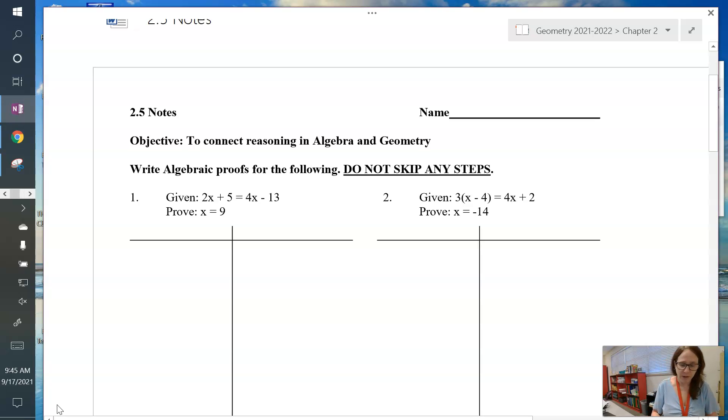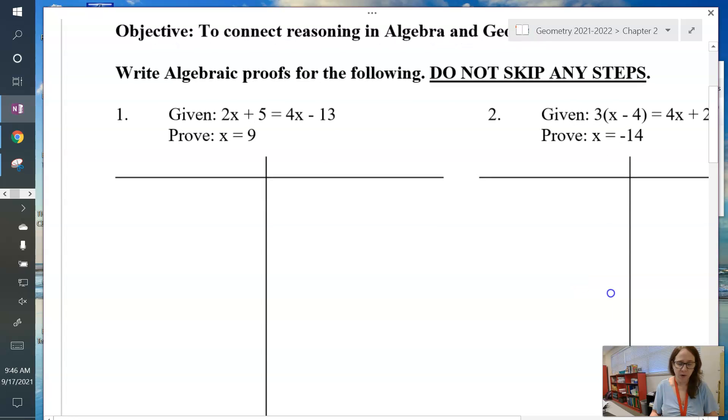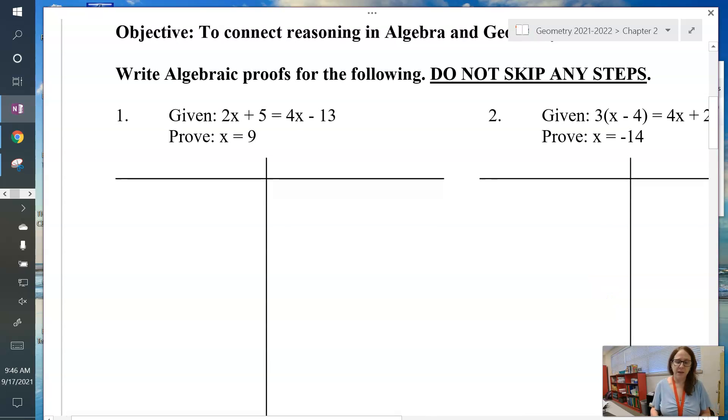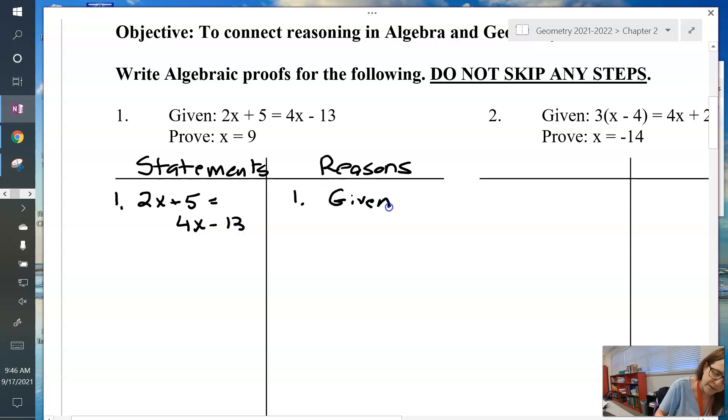We're going to start off just by using algebra. Here's our first one. We are given 2x plus 5 equals 4x minus 13. We are to prove that x equals 9. In our first column, we put our statements and the second column is the reasons. Number each statement and each reason. You always, always, always start with the given. Put your given down first. So 2x plus 5 equals 4x minus 13, and the reason for that is it's given.